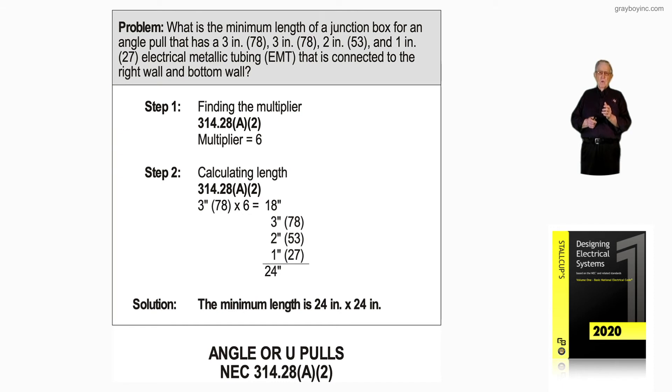If they're number 6 or smaller, then remember, you're going to your table 314.16(A) as in apple. When the conductors are the same size, and when there's a combination of conductors with different sizes, then we would use our table 314.16(B).